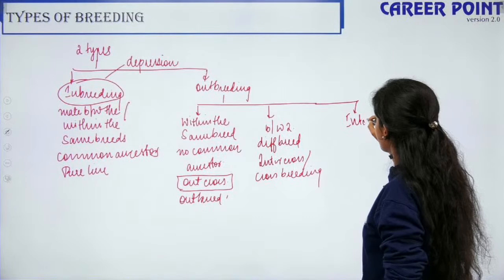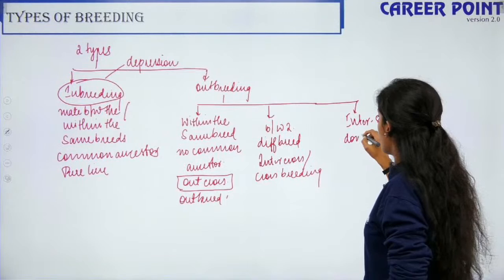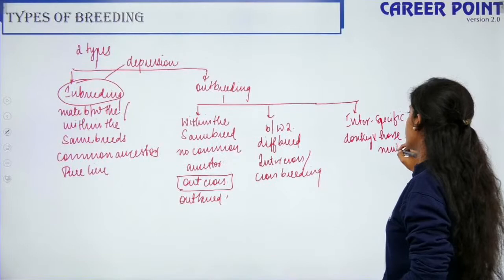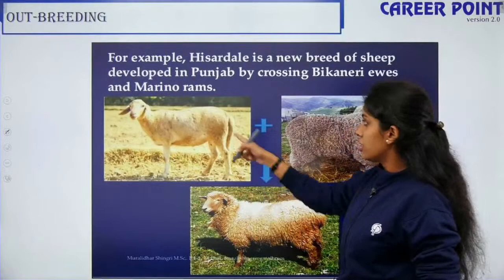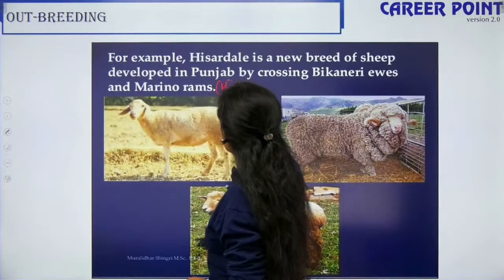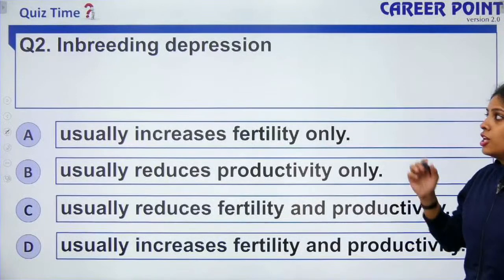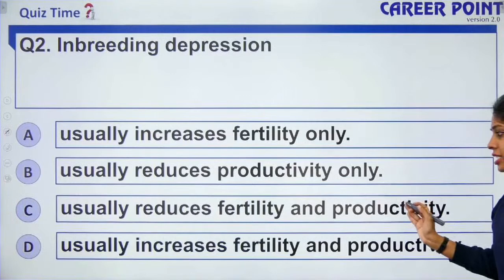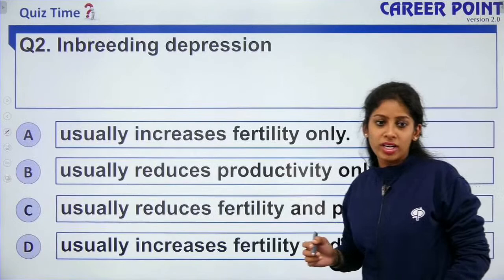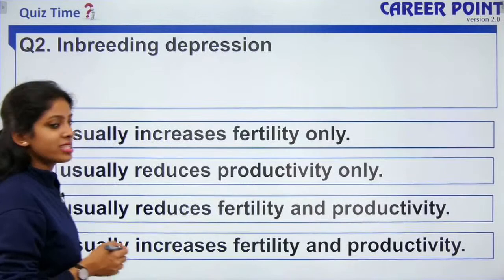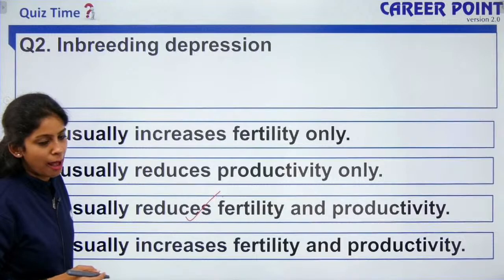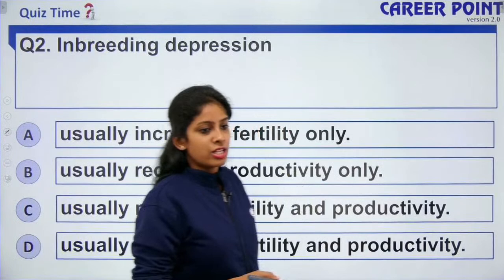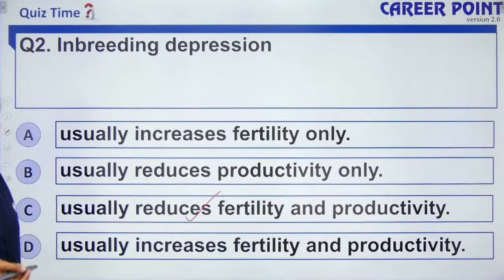The last type is interspecies breeding — between two different species, like a donkey and a horse, producing a mule. Question: inbreeding depression usually reduces fertility and productivity. Continuous inbreeding leads to inbreeding depression that reduces fertility and productivity — so the right answer is option C.